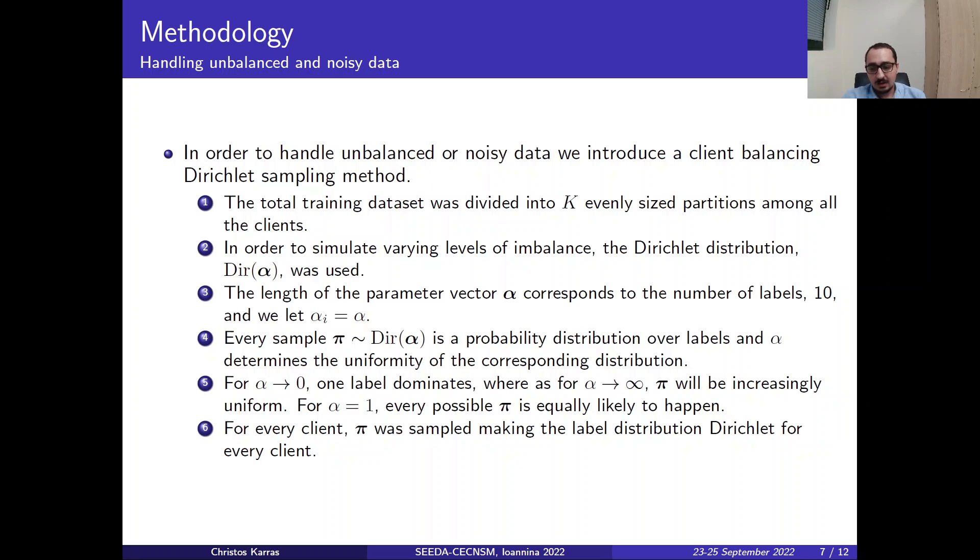So we can observe for α close to 0, we will have one label dominating. Whereas for α close to infinity, P will be increasingly uniform.